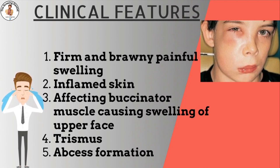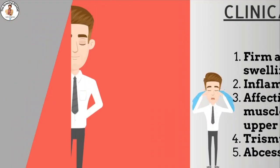In the maxilla, the cortical plate is perforated along with breaking of the buccinator muscle, causing swelling of the upper face. Trismus and regional lymphadenitis occur as well. Infections become localized and an abscess is formed.